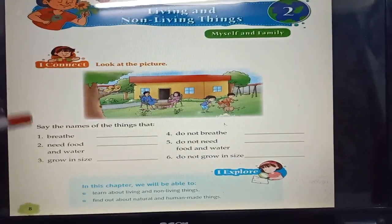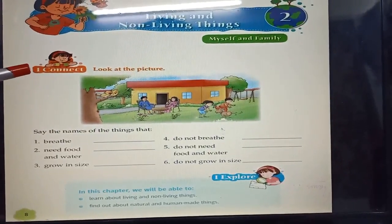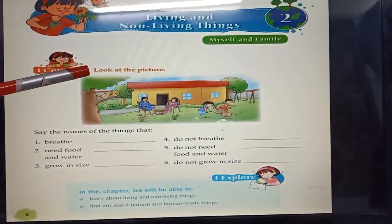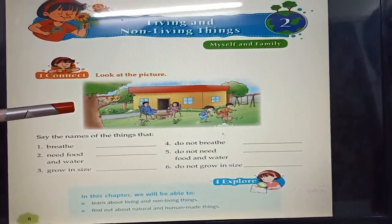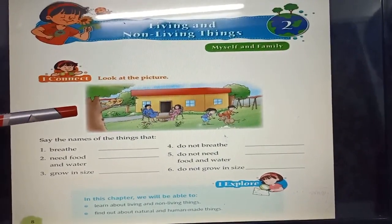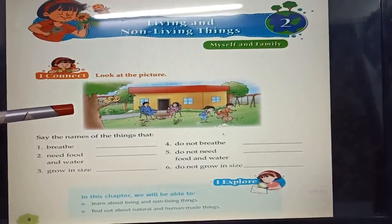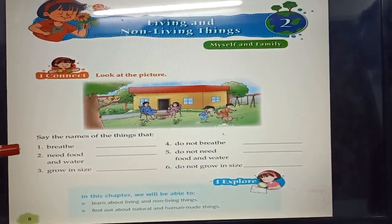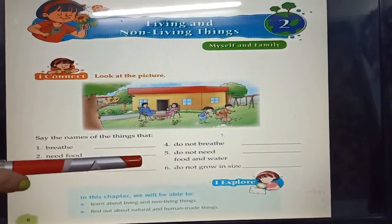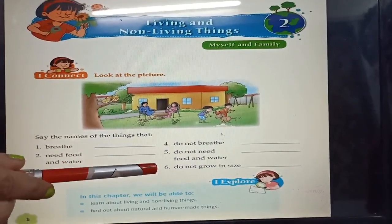Now students, take out your course book. Page number 8, I Connect Activity. Let's do the I Connect Activity. Look at the picture. From the picture, you all have to say which things are living things and which things are non-living things. Left hand side: living things. Right hand side: non-living things.